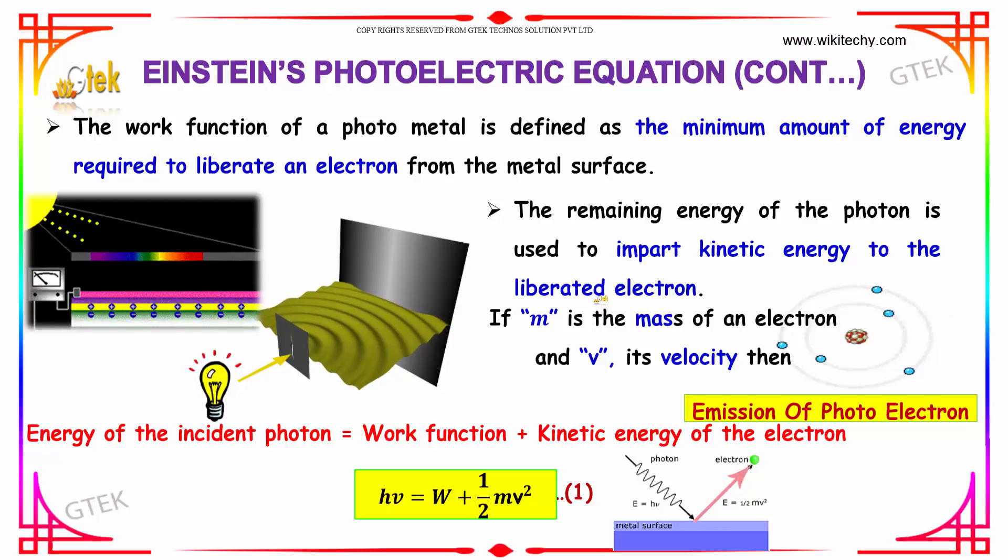The remaining energy of the photon is used to impart the kinetic energy to the liberated electron. If m is the mass of the electron and v is the velocity, then the energy of the Einstein photon is equal to work function plus kinetic energy of the electron. So, h nu is equal to W plus half mv square.